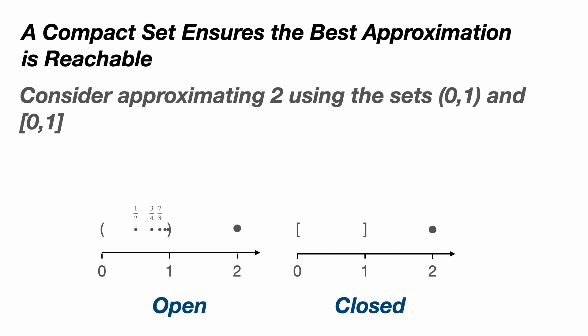Therefore, for any approximation in the interval, you can always find a better one. In the case of the closed interval, we find that the same sequence converges to 1 and 1 is in fact in the set. Since no other number in the closed interval from 0 to 1 is closer to 2 than 1, we've found the best approximation.